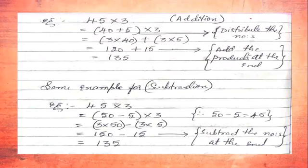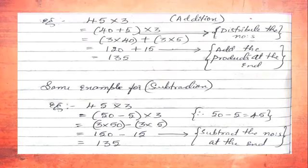Here the number 45 is distributed as two numbers: 40 and 5. When you add them you get 45 again. So 45 is written as (40 + 5). We write it in a bracket: (40 + 5) × 3. Now we will multiply 3 with 40 first, and next 3 with 5.